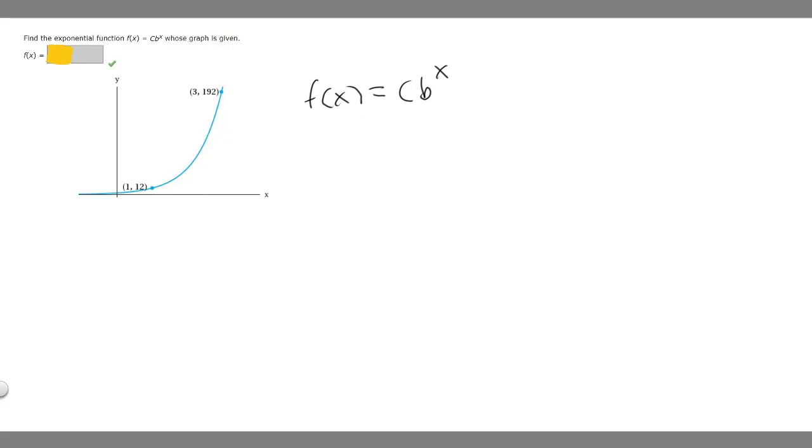We're going to use the elimination method to find one of the values. I'm going to start with the bigger point, but it doesn't really matter which one you start with. We plug in the y-coordinate, so 192 = c*b^3, where we replace x with 3. This is our first equation.